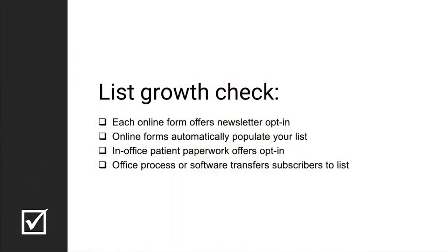What if you're underperforming? The first thing to look at is your online forms. Every one of your online forms should offer a checkbox allowing the individual to opt in to subscribe to your list. It should be automatically linked directly to your email marketing software — whether that's practice management or CRM software, or something like Constant Contact or MailChimp. Those forms, in addition to directly alerting you to the patient inquiry, should automatically populate that subscriber's opt-in onto your list. It's automatic growth.